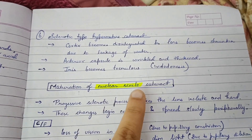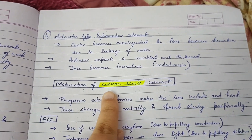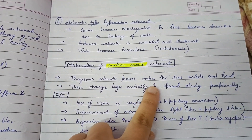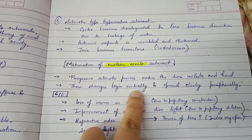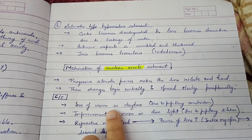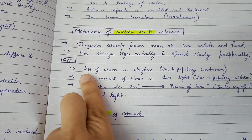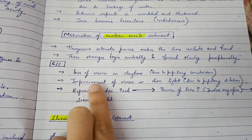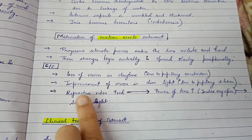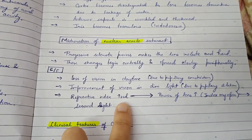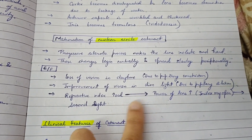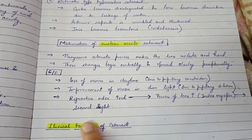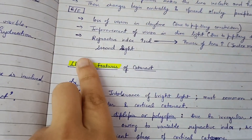Now discussing maturation of nuclear senile cataract. A progressive sclerotic process makes the lens inelastic and hard. These changes begin centrally and spread slowly peripherally. Clinical features of nuclear senile cataract include loss of vision in daytime due to pupillary constriction, and improvement of vision in dim light due to pupillary dilation. The refractive index is increased, thus the power of the lens is increased, leading to index myopia — this is known as second sight.